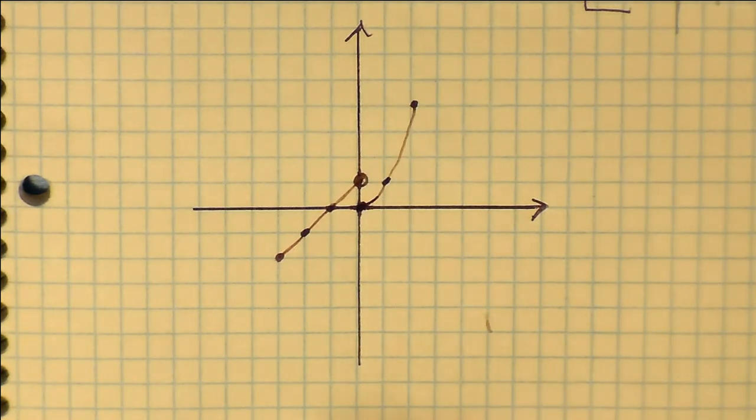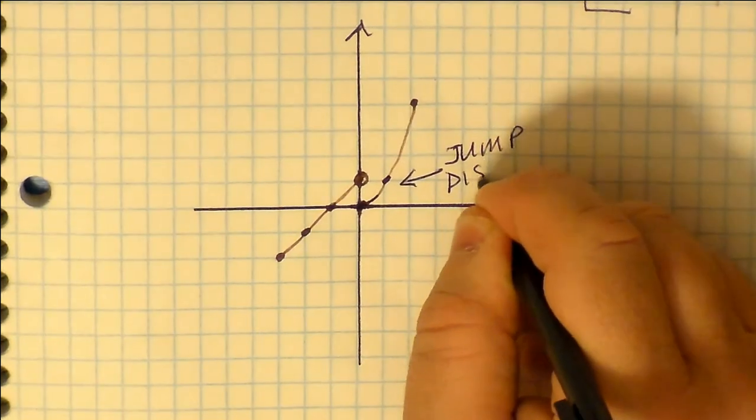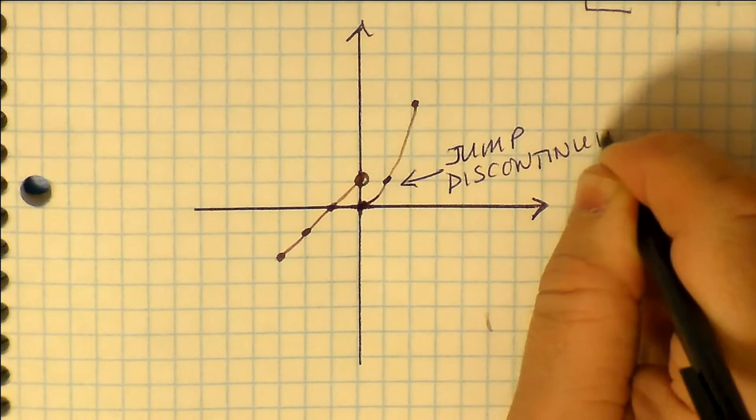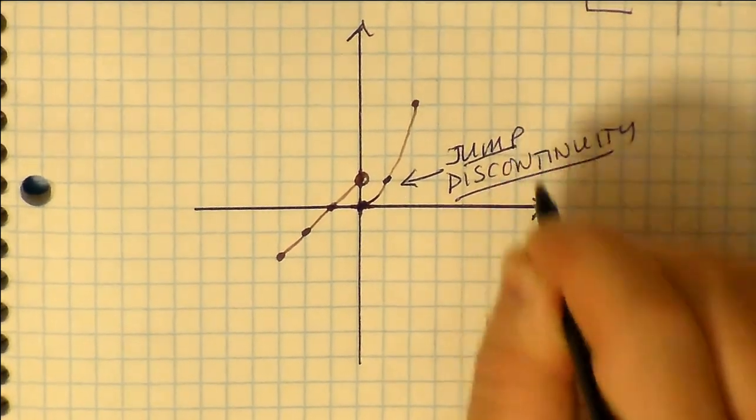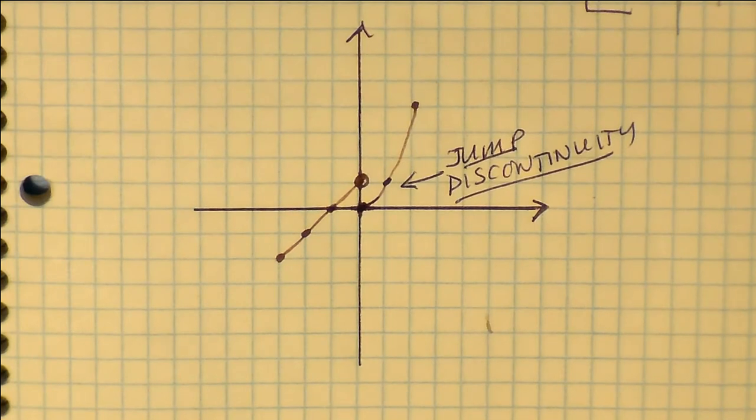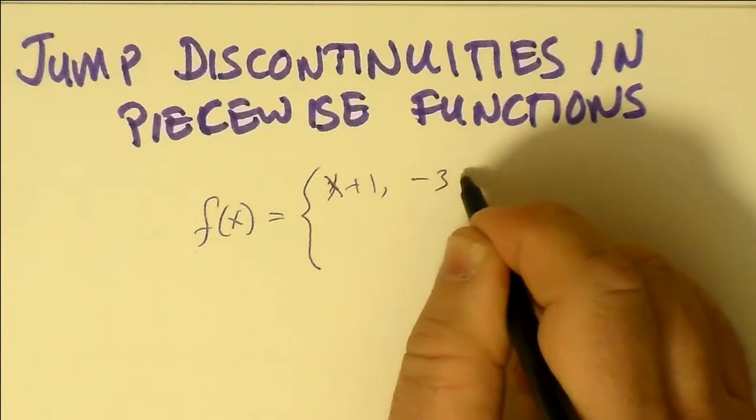As you can see here, I just basically connected the dots as well as I could, recognizing that the first piece was a line and the second piece was part of a parabola concave up.